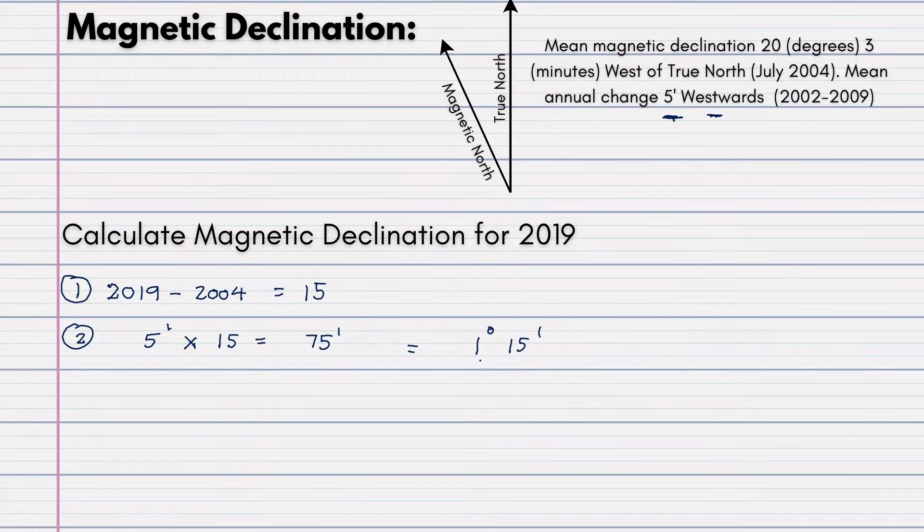And now, we have to either add or subtract this towards the magnetic declination. Here we can see it is westwards. Therefore, we will have to add. For step 3, now we can see your mean magnetic declination will be 20 degrees and 3 minutes. 20 degrees, 3 minutes plus 1 degree and 15 minutes will give us the magnetic declination for 2019.